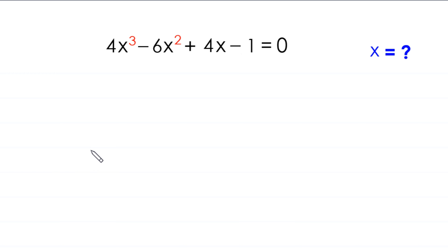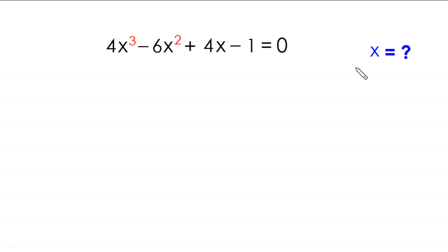Hello everyone, you are welcome. We are going to solve this very nice cubic equation: 4x³ − 6x² + 4x − 1 = 0. Our job is to find all possible values of x, so let's start.